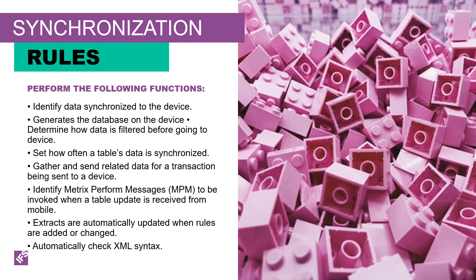Sync rules perform the following functions: they identify which tables have their data synchronized to the device; they generate a database on the device including tables and indexes; they determine how data is filtered before going to the device; they gather and send related data for transactions being sent to the device; they identify the NPM to be invoked when a table is updated and data is received from mobile; extracts are automatically updated when rules are added or changed; and sync rules automatically check for XML.